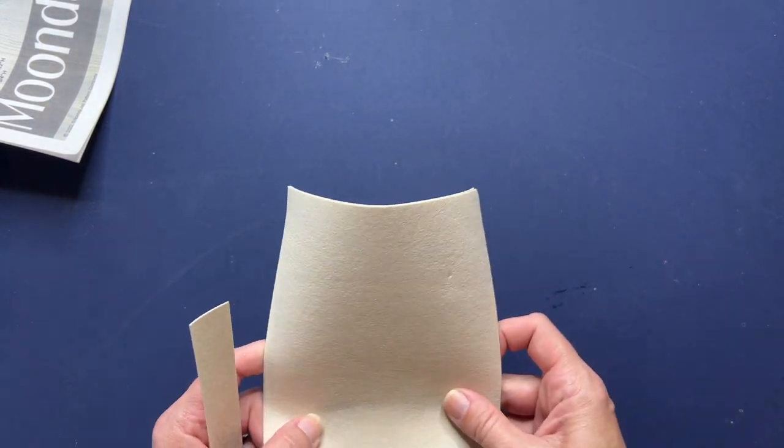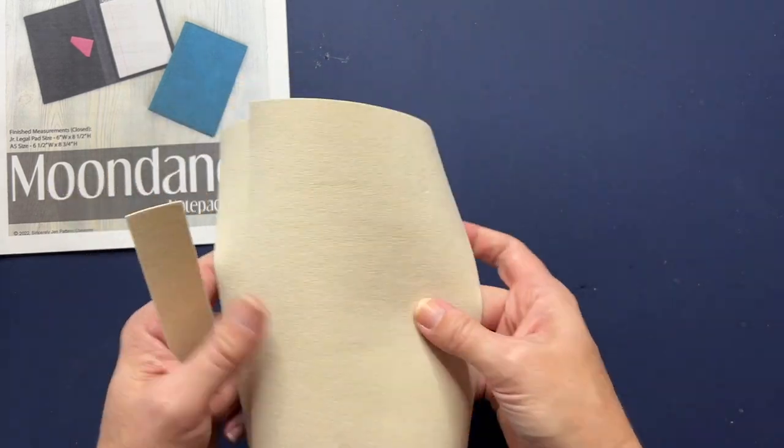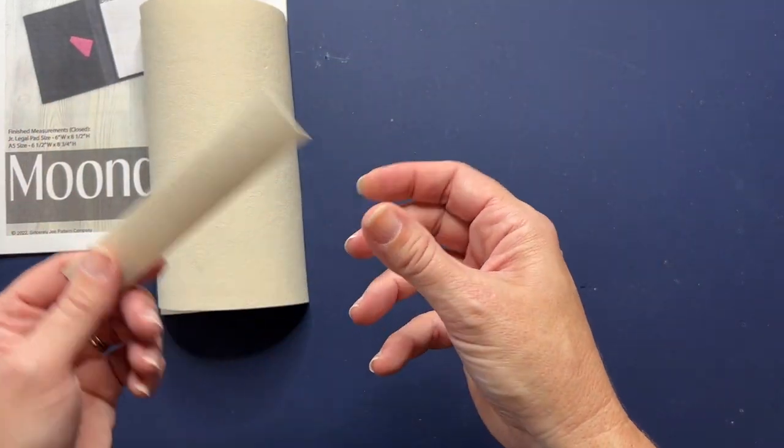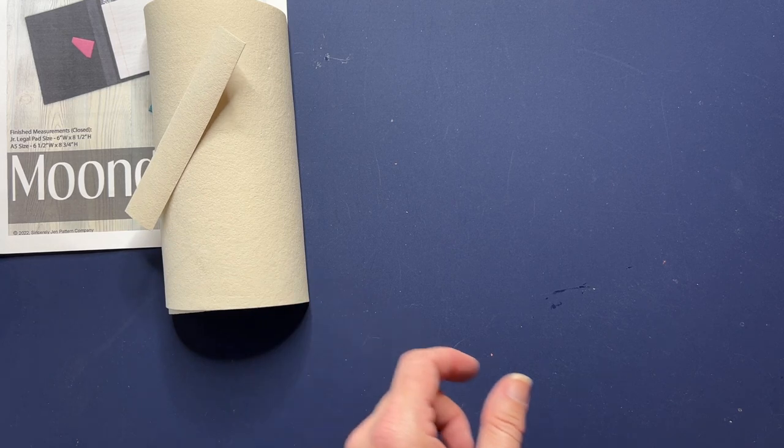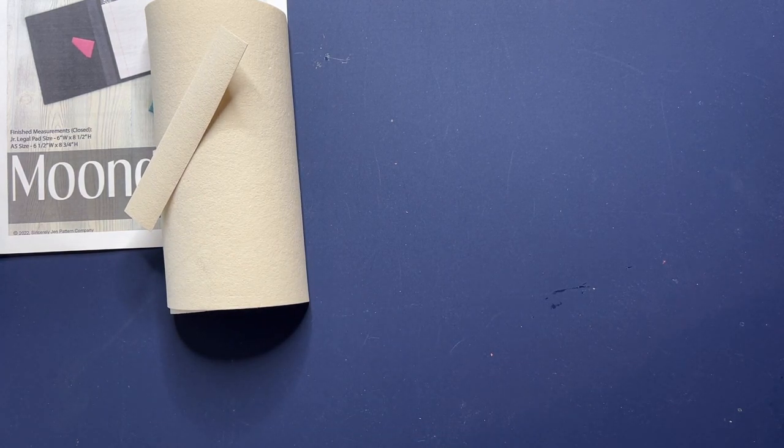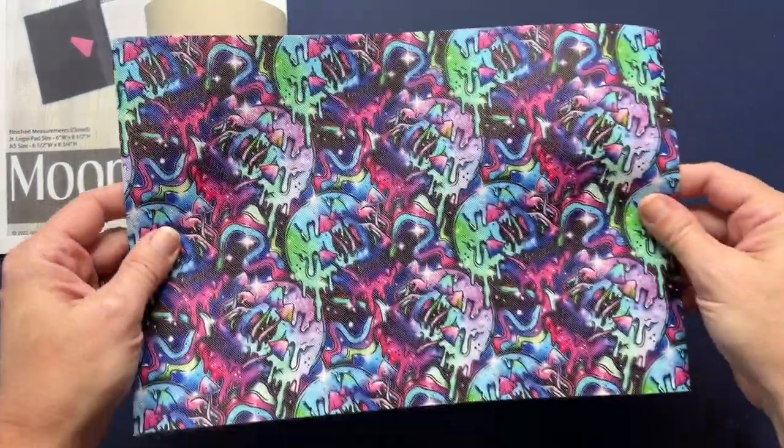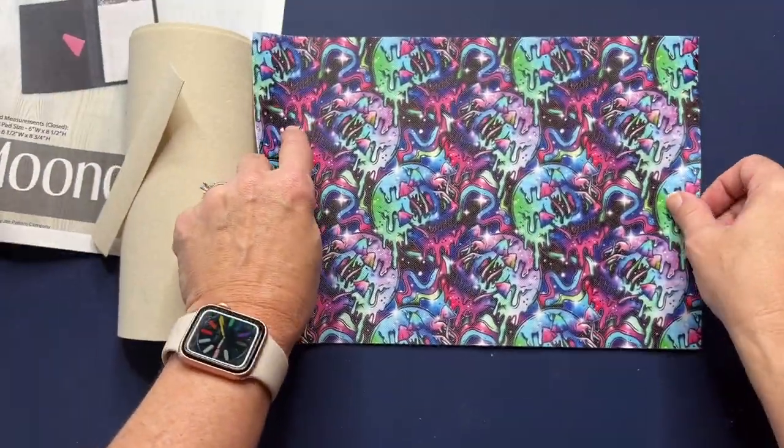So all of the measurements are provided in the pattern. You're going to have a couple stabilizers here, a couple main stabilizers and then a smaller piece of stabilizer. You're also going to need your exterior piece and I'm using this vinyl here. So you have the one exterior piece there.